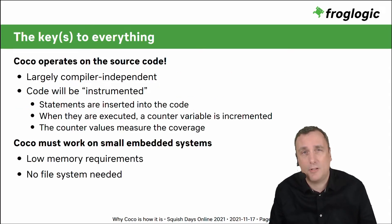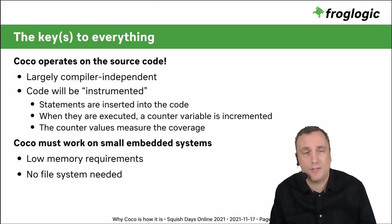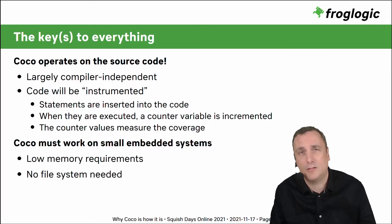COCO works on the source code of your application. Unlike other tools that try to get information out of the binary, we promise it sees every detail of your application in a very precise manner. This makes us independent of what the compiler produces, since we sit in front of the compiler. The instrumentation process involves inserting statements into the source code, and when those statements are hit during execution, some counters are increased.